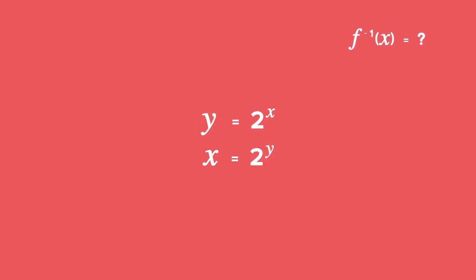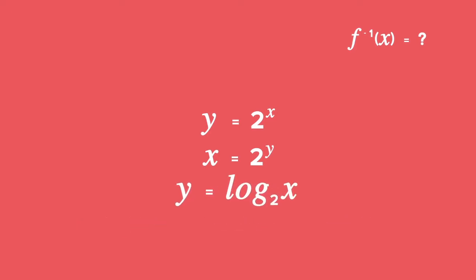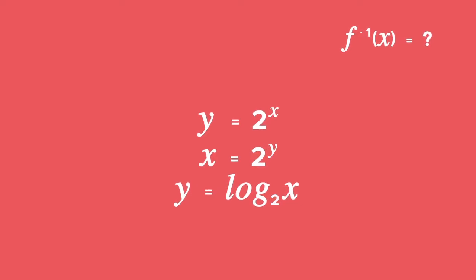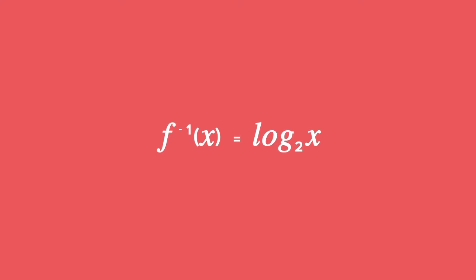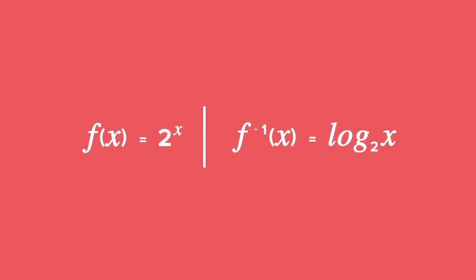Step 2 is to make y the subject of the formula of your new equation. So now we need to convert from exponential to log form and get y equals log x base 2. Rewriting using functional notation, we get f inverse of x equals log x base 2. This is the inverse of the exponential function f of x equals 2 to the power of x.